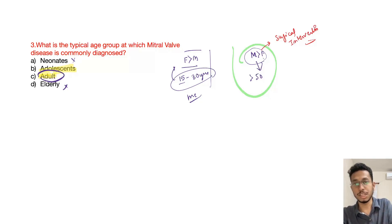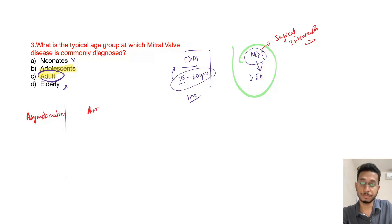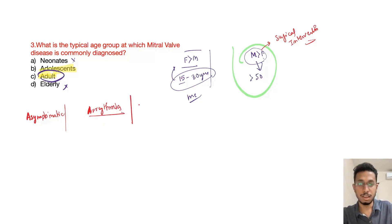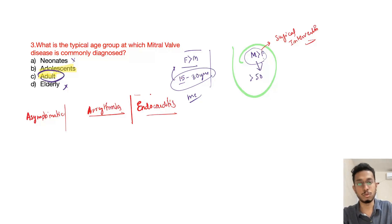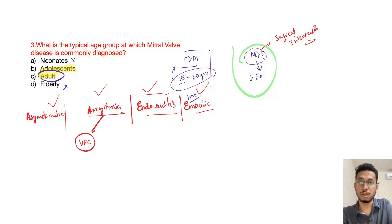Regarding presentation: the most common presentation is asymptomatic discovery during echocardiography performed for another reason. Mitral valve prolapse may also present as arrhythmia. If there is degeneration or change in the valve, it can lead to endocarditis, as anaerobic bacteria can grow there, and also lead to septic embolic phenomena and pulmonary embolism. Among arrhythmias, the most commonly seen is ventricular premature complex.